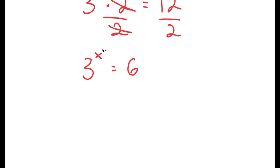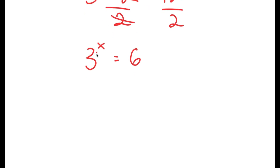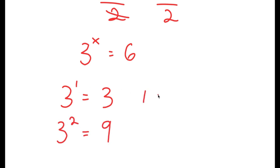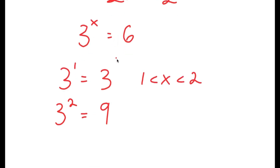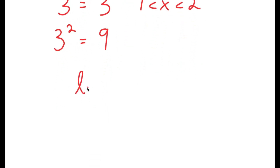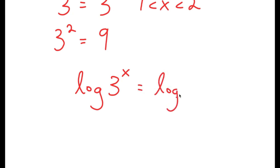To solve this, we know that x is going to be a decimal because 3 to the power of 1 is 3 and 3 to the power of 2 is 9. So x is going to be somewhere in between 1 and 2. We want to find the exact value of x, so I'm going to start by taking the log on both sides. So I get log of 3 to the power of x is equal to log 6.